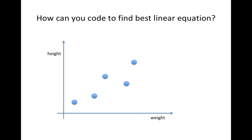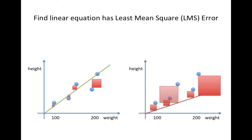Now, how can you code to find the best linear equation? This is a more advanced question than just picking the better line, since we need to find the best line given only the data points here. We can redefine this problem mathematically as: find the linear equation with the least mean square error.